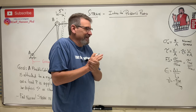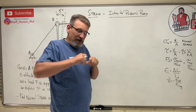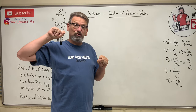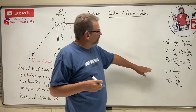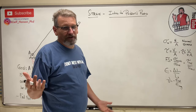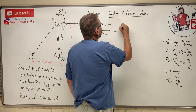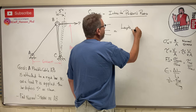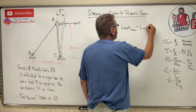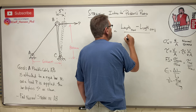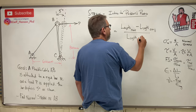We know what stress is — stress is like the intensity of a force, how intense it is on a certain area. Strain is just deformation. As I pull on something it elongates, it gets longer, it stretches — that's strain. There's an equation for strain: strain is given with the Greek letter epsilon. Epsilon is the new stretched length minus the original length, divided by the original length.